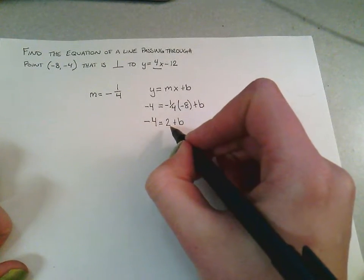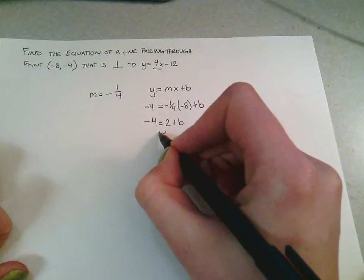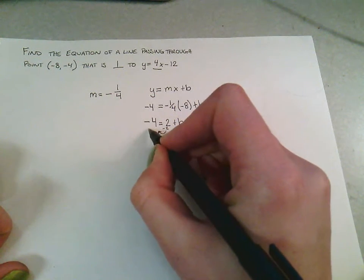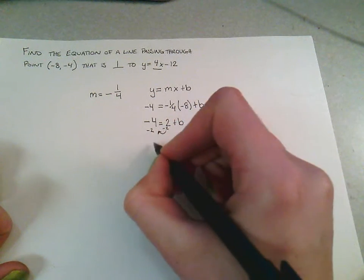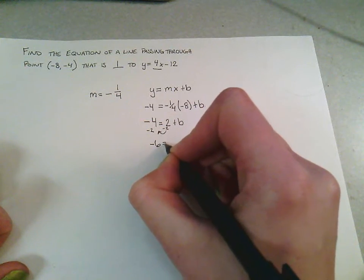Once we have that, we can move our 2 over to this side by subtracting 2 from both sides. We get -6 = b.